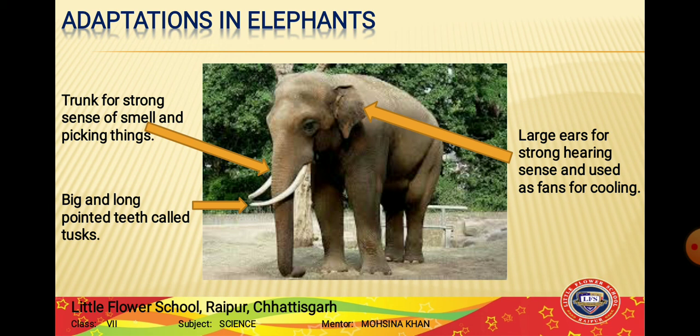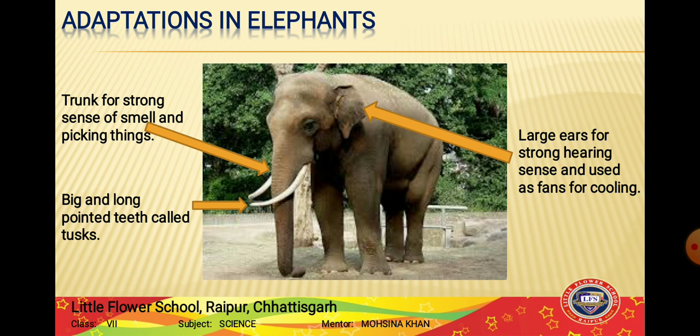Elephants have big, long, pointed teeth called tusks, which are modified teeth. They use their tusks to tear off the bark of trees they eat as food - for example, tearing the outer covering of bamboo shoots. They also use tusks for fighting enemies and protecting themselves. If lions, tigers, or leopards attack, the elephant uses its tusks to defend itself.